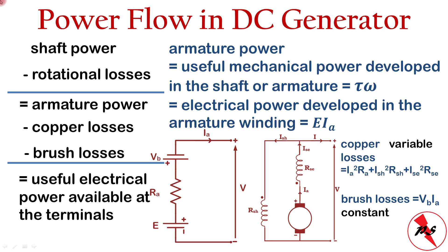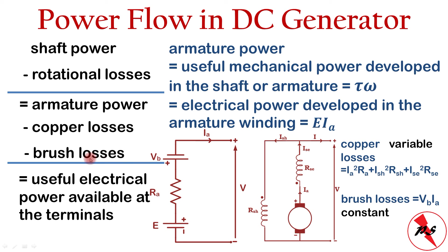In summary, the power flow in a DC generator is: shaft mechanical power minus rotational losses (friction, windage, core loss, stray losses) gives armature power, which converts to electrical power E × Iₐ. Subtracting copper losses in the armature, shunt, and series windings, plus constant brush losses due to the commutator brushes, yields the useful electrical power available at the terminals. This concludes the video.